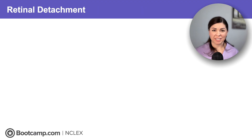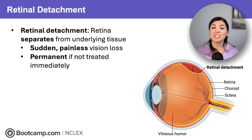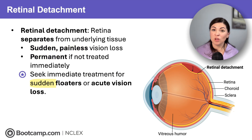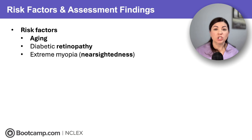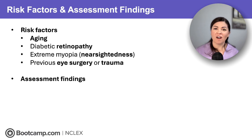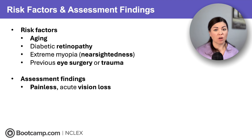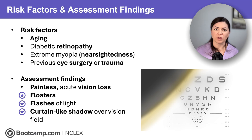Now let's talk about retinal detachment, and this one is a true emergency. It occurs when the retina peels away from the tissue below. It leads to sudden painless vision loss that is permanent if left untreated. Remember on NCLEX, if a client has sudden floaters in the visual field or acute vision loss, they must immediately seek treatment to prevent permanent blindness. Risks include aging, diabetic retinopathy, extreme nearsightedness, and past eye surgery or trauma. Findings that indicate retinal detachment include painless acute vision loss, floaters, flashes of light, and a curtain dropping across the visual field — often described by clients as a black curtain or shadow.